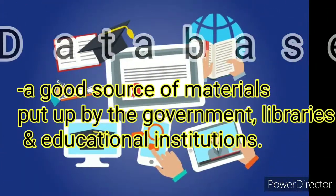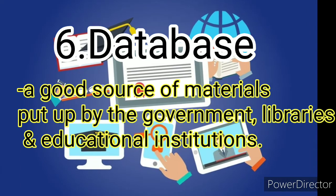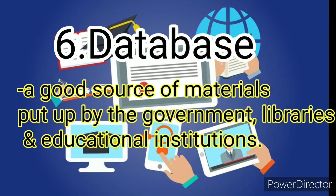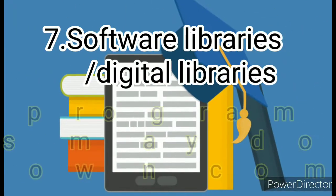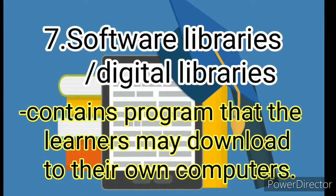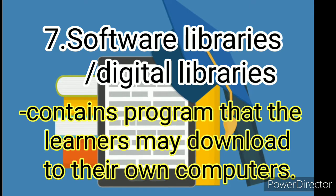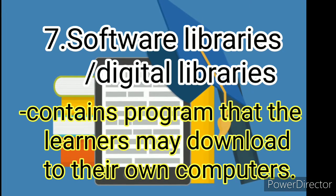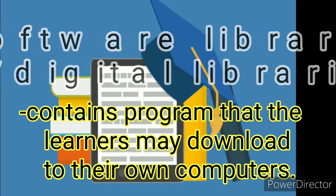The sixth one is the database. A database is a good source of materials put up by the government, libraries, and educational institutions. The seventh one is software libraries or digital libraries, which contain programs that learners may download to their own computers. Software libraries also include e-books, interactive resources, and teaching tools.